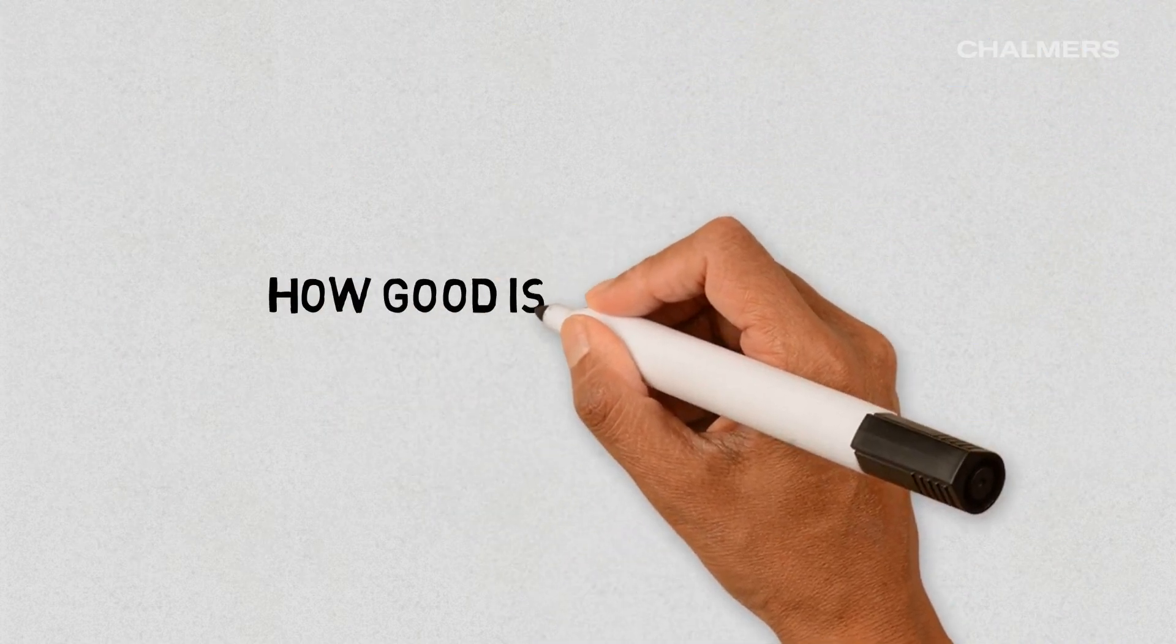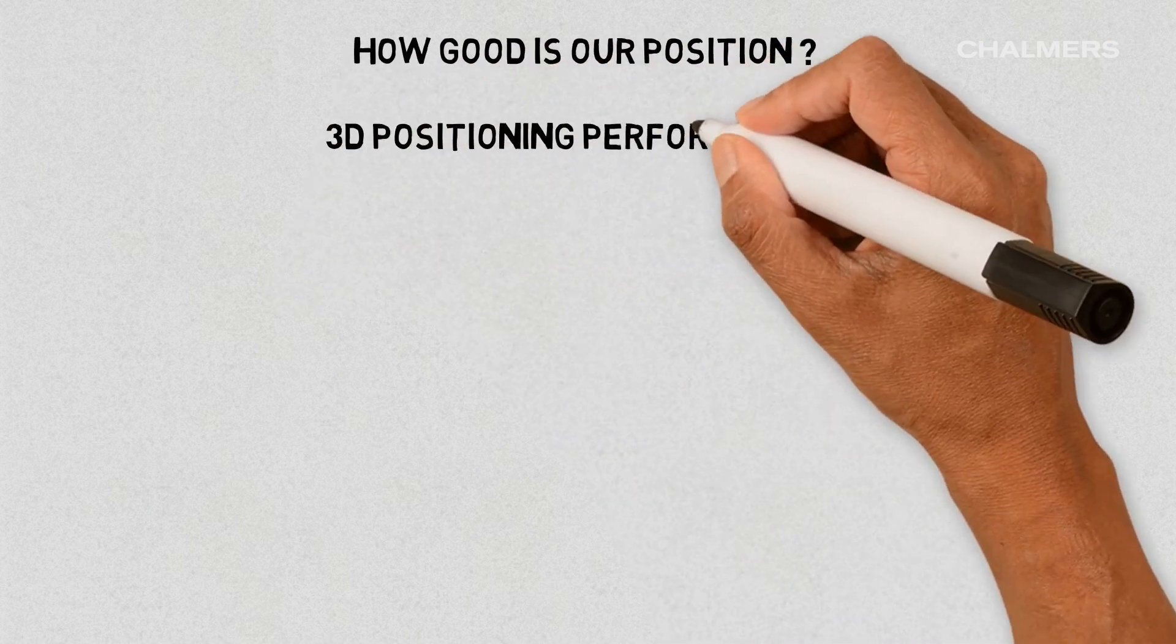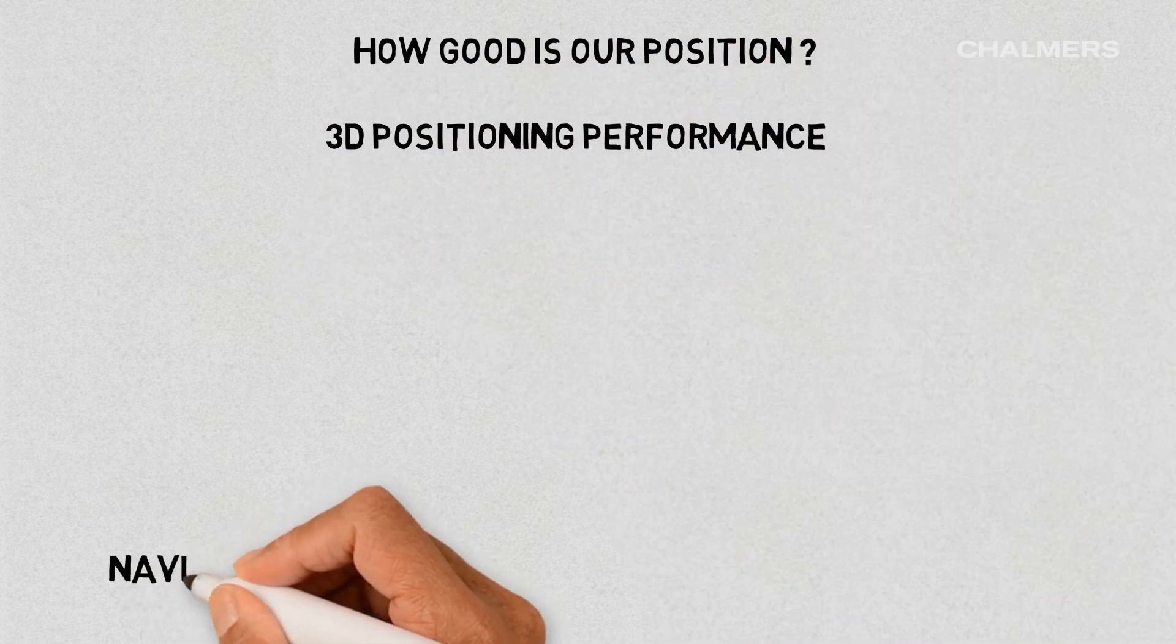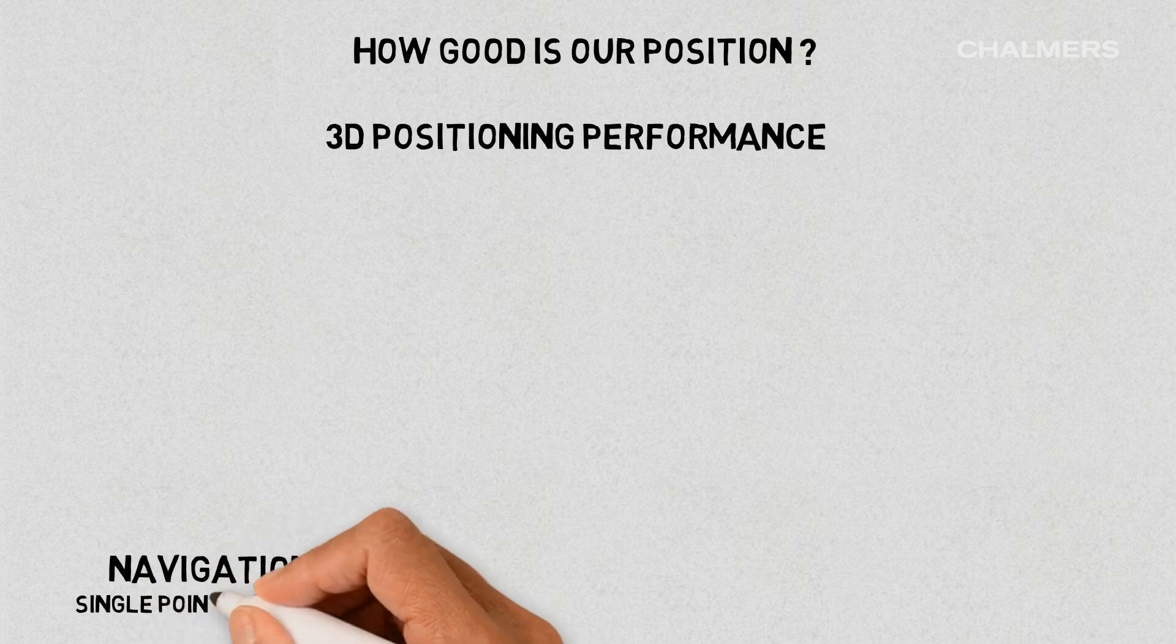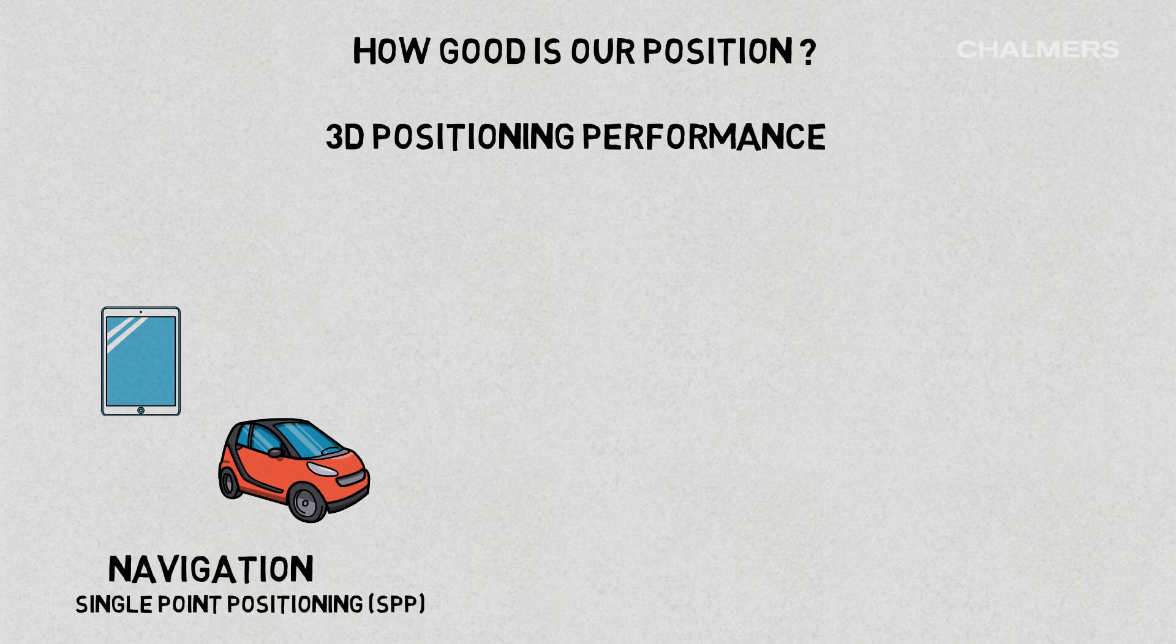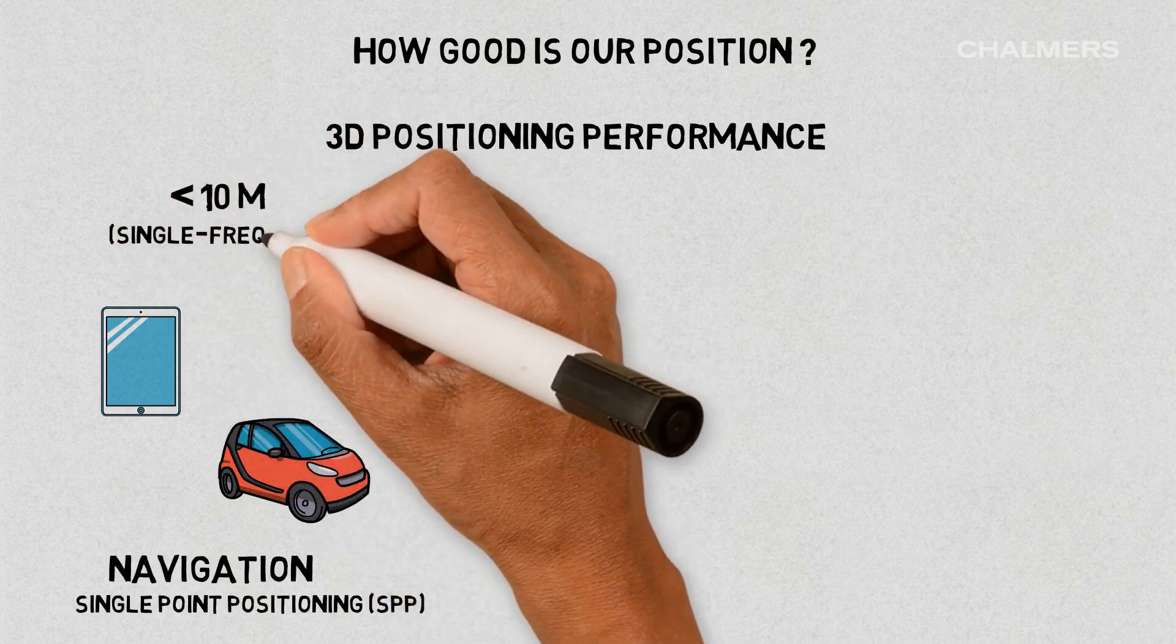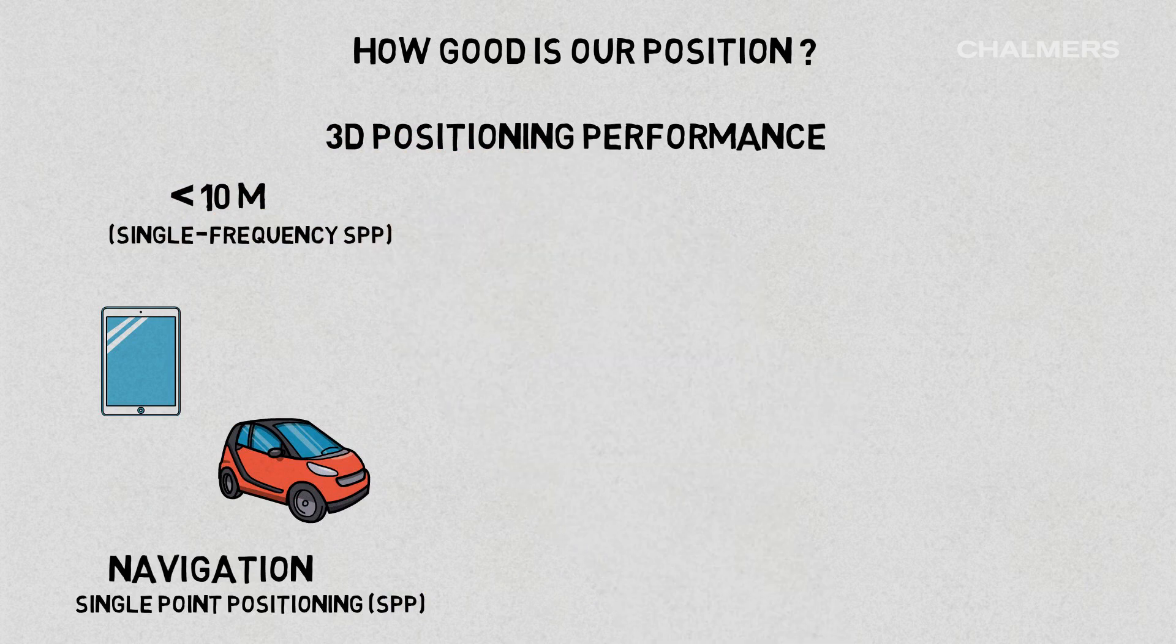GNSS has many applications and can be found in various equipment ranging from smartphones to specialized high precision receivers. One can say that typical three-dimensional positioning performance in devices used for navigation may reach several meters, but it all depends upon the quantity of visible satellites and the constellations that are supported by your device.